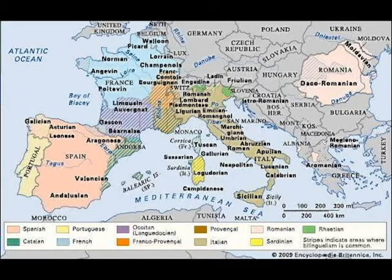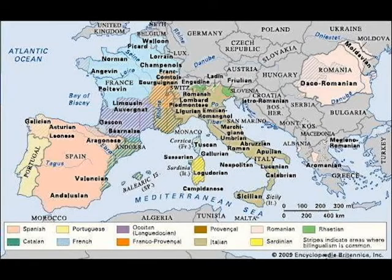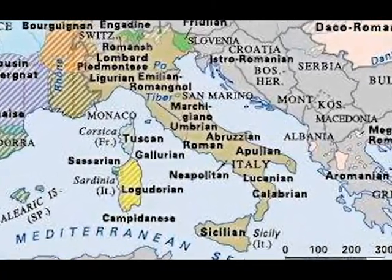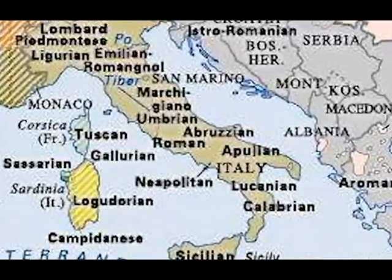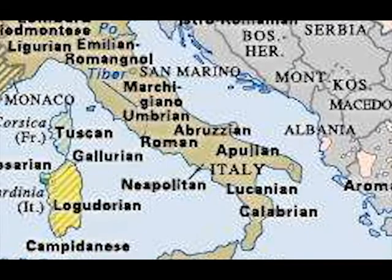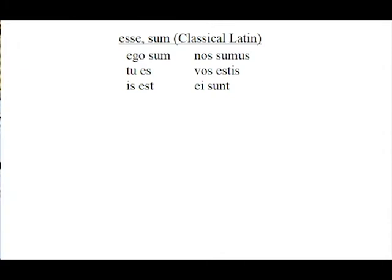So here we have a map of Europe with respect to the Romance languages, and there's a key at the bottom showing what languages are spoken where. Let's start right at the heart of the former Roman Empire, appropriately Rome, in what is modern-day Italy. Probably the most important Latin verb that these verbs came from is 'esse sum,' which is the basic verb 'to be.' Here are the forms: ego sum, tu es, is est, nos sumus, vos estes, and esunt.